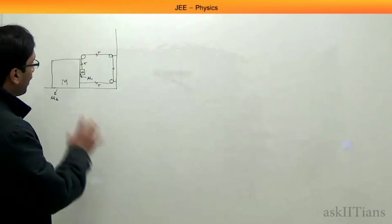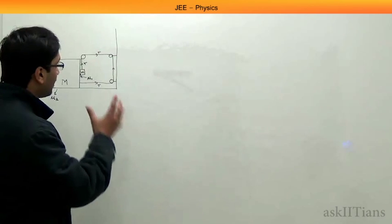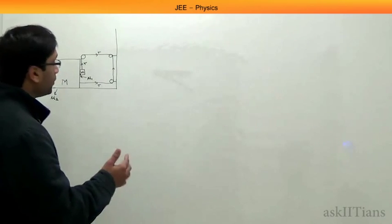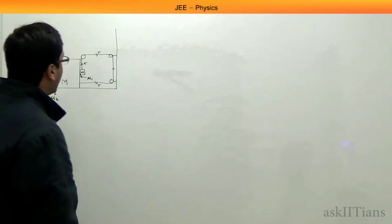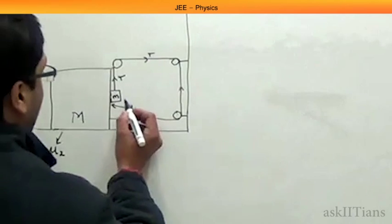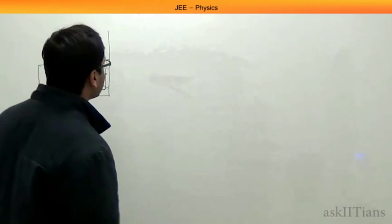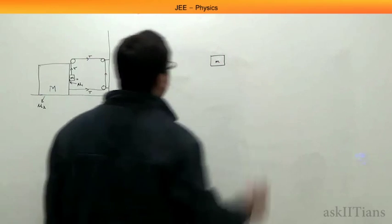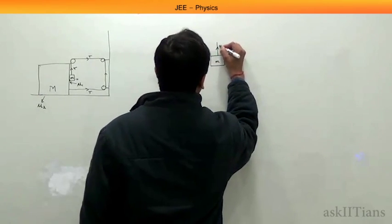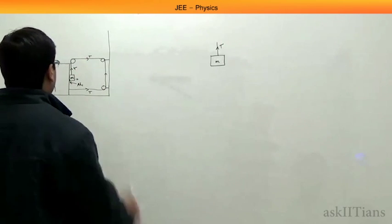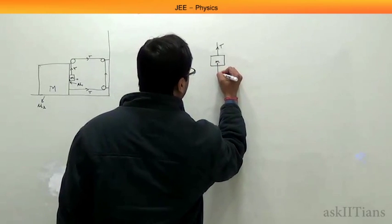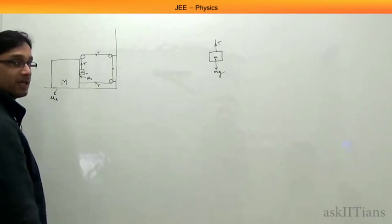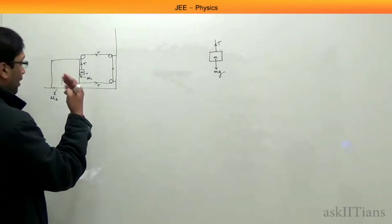If you want to proceed with this problem, you have to consider each of these masses as an individual mass, draw a free body diagram of each, find all the forces acting on that mass, and then apply Newton's second law to find the acceleration. So for the first mass of small mass m, if I draw its free body diagram, the forces acting on it are: first, the tension acting upwards produced by the string it is attached to; second, the weight mg acting downwards.